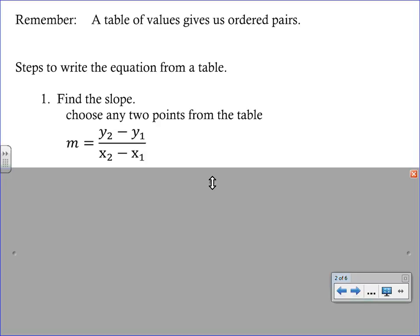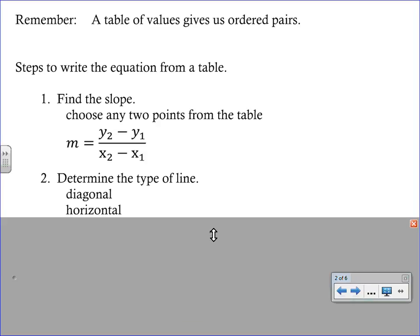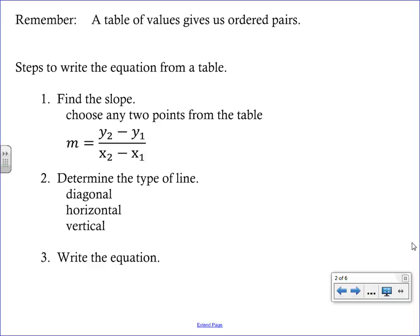Once you've determined the slope, you need to decide what type of a line you are dealing with. And remember your choices are diagonal, horizontal, and vertical. And depending upon that line, that's going to determine what type of an equation you need. And so your final step is to write the equation. And that's going to look different depending on if it's a diagonal line versus a horizontal versus a vertical.